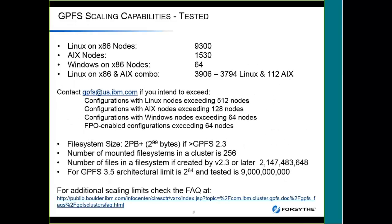In terms of scaling capability, IBM has actually tested up to 93 Linux on x86 nodes in a cluster, up to 1,530 AIX. For a Linux and AIX combo, the tested number from their FAQ was 3,794 Linux and 112 AIX all in the same cluster. For any configuration that exceeds these numbers, development wants to review it to make sure there are no issues and that they can give you the support you need — it's a real smart move to have them proof the configuration.